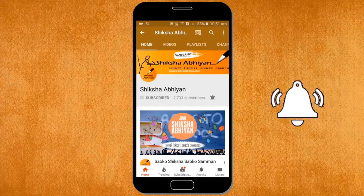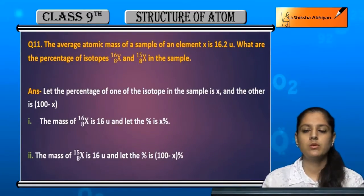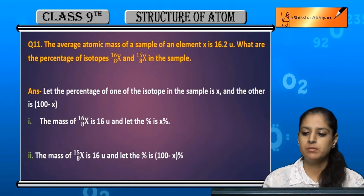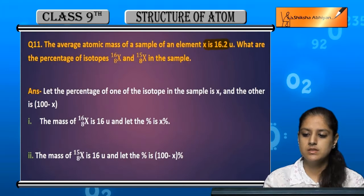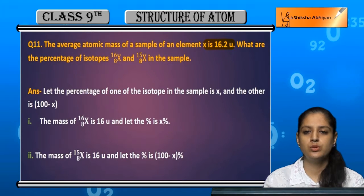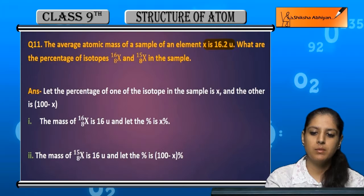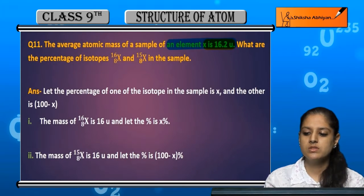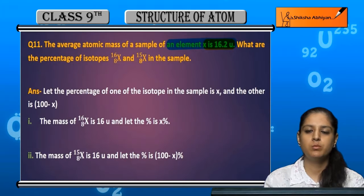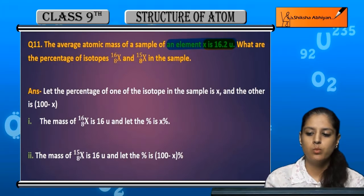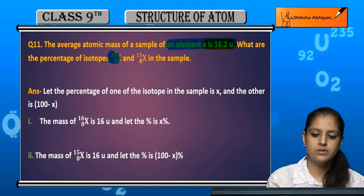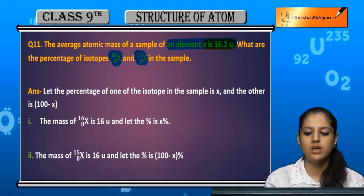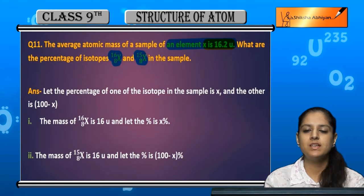Now question number 11. The average atomic mass of a sample of an element X is 16.2 units. What are the percentage of isotopes 16_8X and 18_8X? What is the percentage of these two isotopes which we have to find?